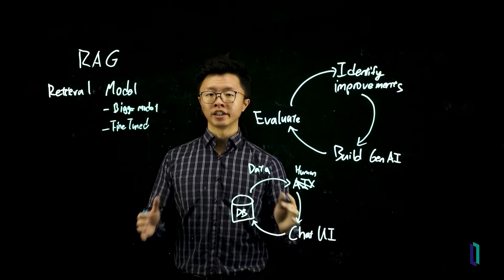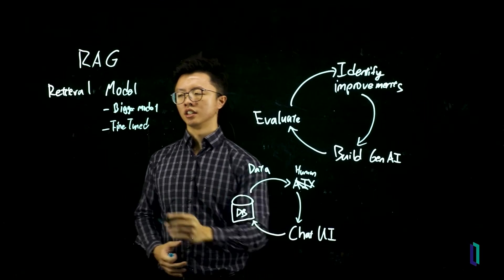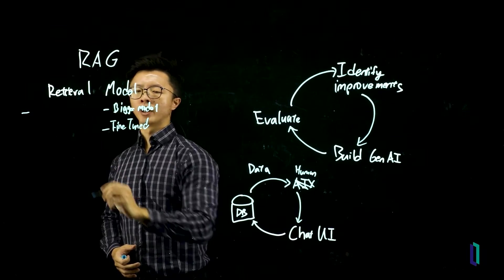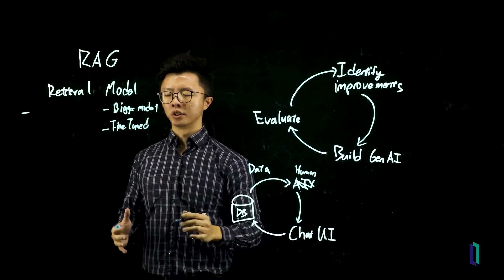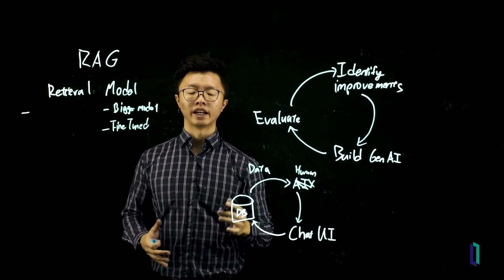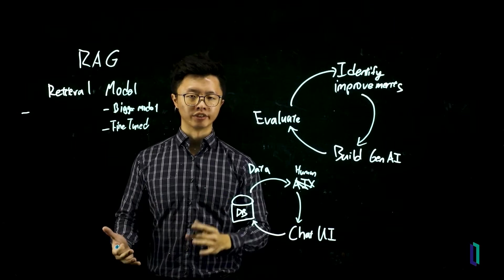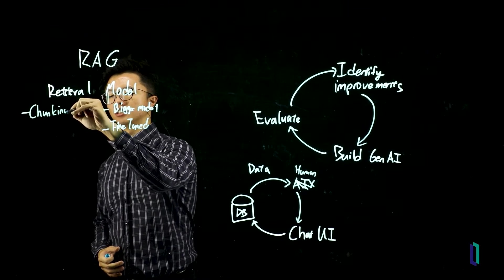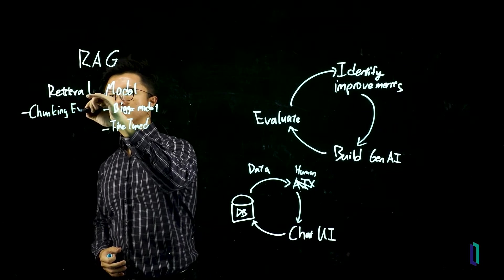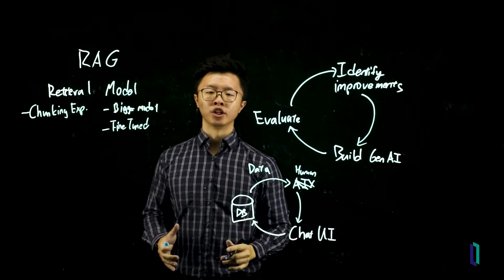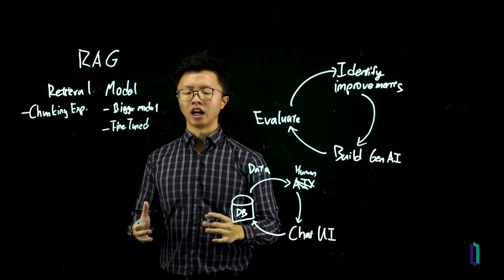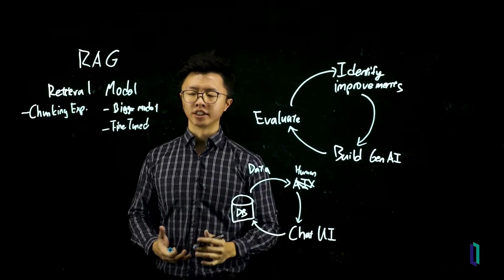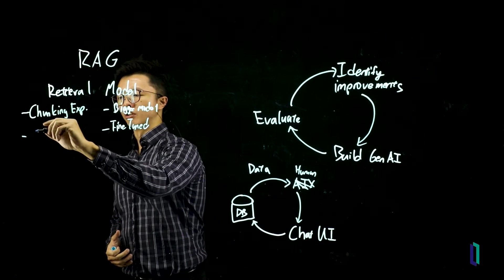When it comes to retrieval, there are a variety of ways to improve your performance. And the most simple way to look at it would be to start with your chunking, to look at how you're storing your data in your vector database. So you can conduct some chunking experiments. This is where you vary your chunk size, your overlap, and how you're storing it in your vector database. You can also vary your retrieval method.